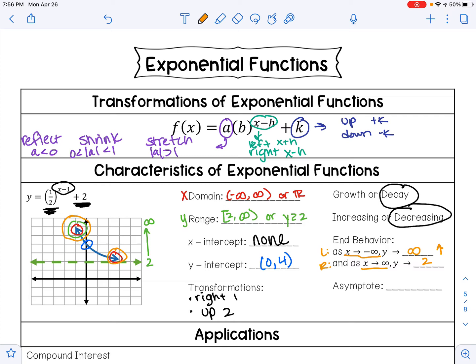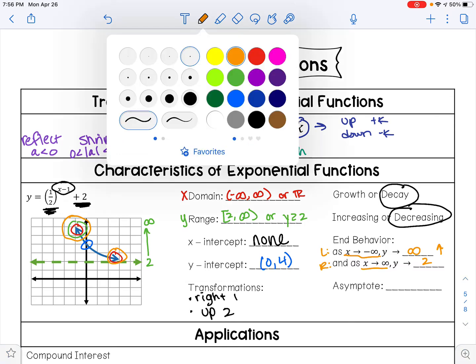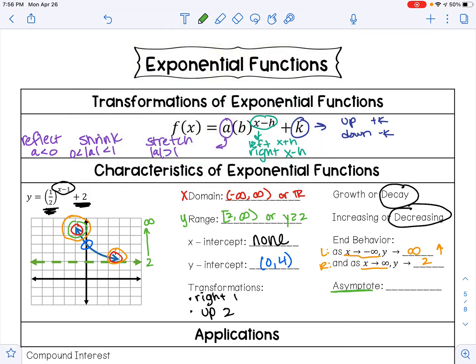My asymptote is at y = 2. And then the last thing that they're looking for is the asymptote, and that's just the equation of this line right here.